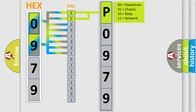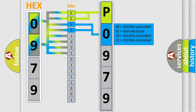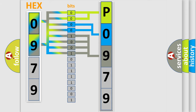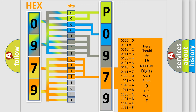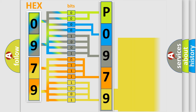The next two bits determine the second character. The last bits of the first byte define the third character of the code. The second byte is composed of a combination of eight bits. The first four bits determine the fourth character of the code, and the combination of the last four bits defines the fifth character. A single byte conceals 256 possible combinations.